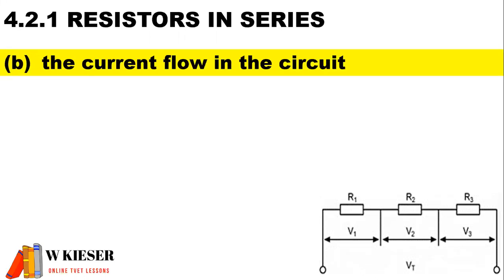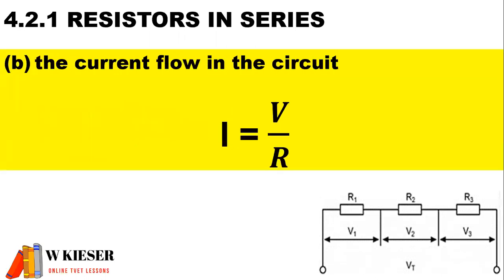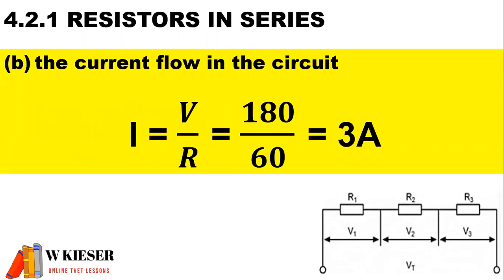To calculate the total current flow throughout the circuit, we're going to use Ohm's Law: V is equal to I times R, so I is equal to V over R. The supply voltage of 180 divided by the resistance total of 60 ohms means that we have current flowing throughout the circuit of three amps.